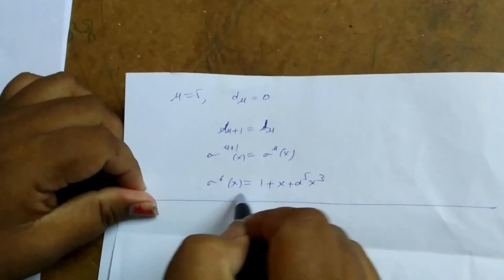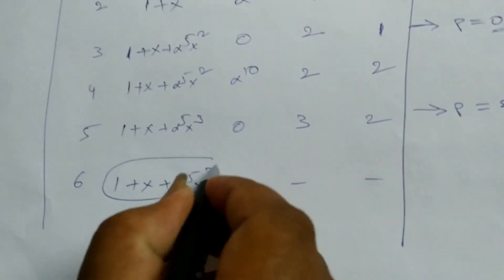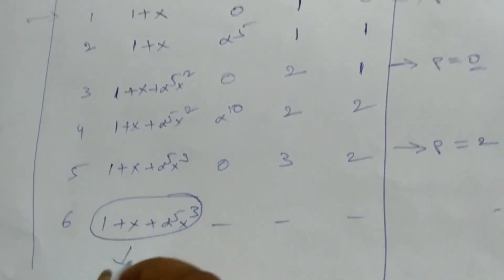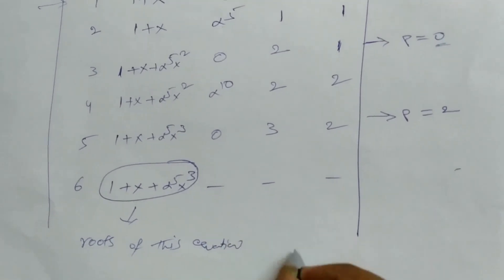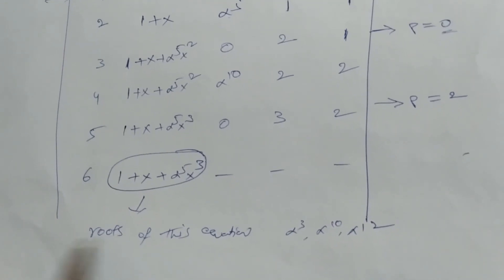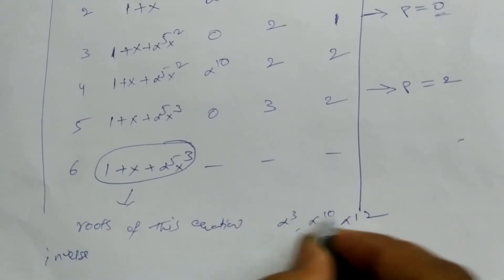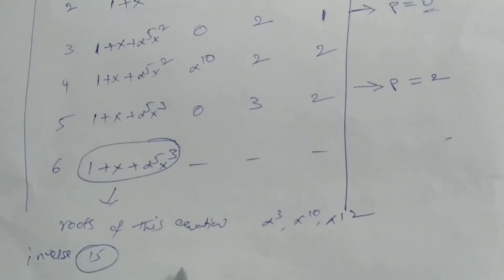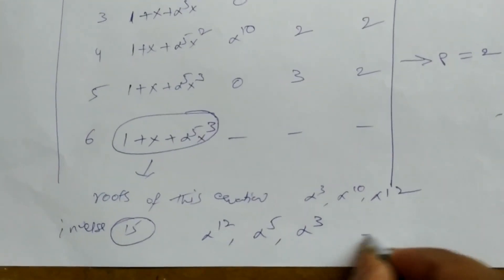Since d5=0 for μ=5, we get σ_6(x) = σ_5(x) = 1+x+α^5·x³. This is the final error locator polynomial. Its roots are α³, α^10, α^12, and taking the inverses (subtracting exponents from 15) gives error positions α^12, α^5, α^3.